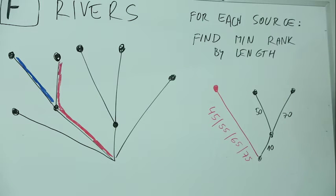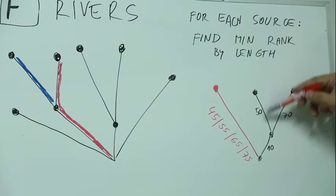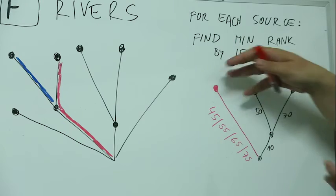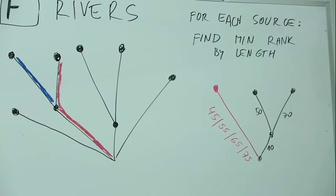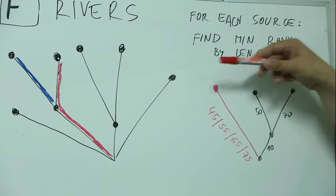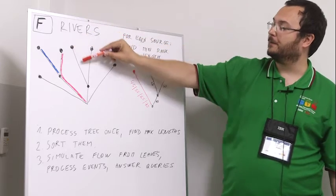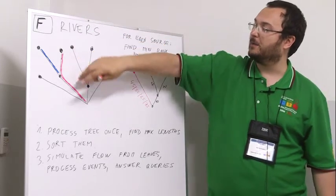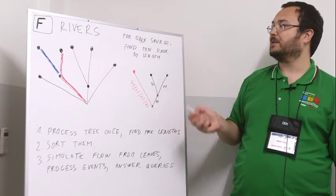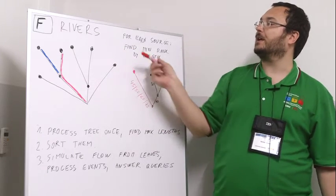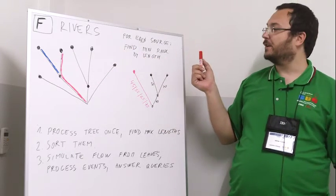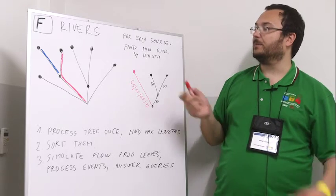So the structure somehow changes according to what the length of this river is, so there is nothing completely static we could pre-compute about the rest of the tree in order to answer this quickly. Obviously there would be a quadratic time solution where we do this separately for each leaf, so for each leaf we first build this path and then we process the entire tree, but this is too slow because the number of leaves of the tree can be up to 100,000.